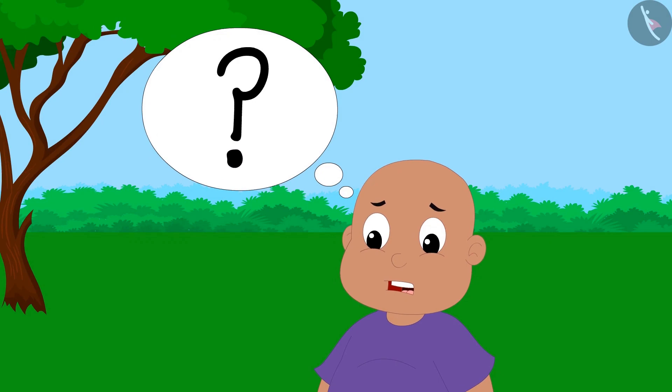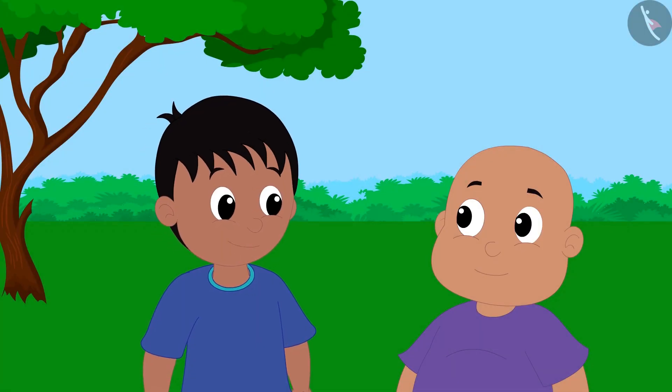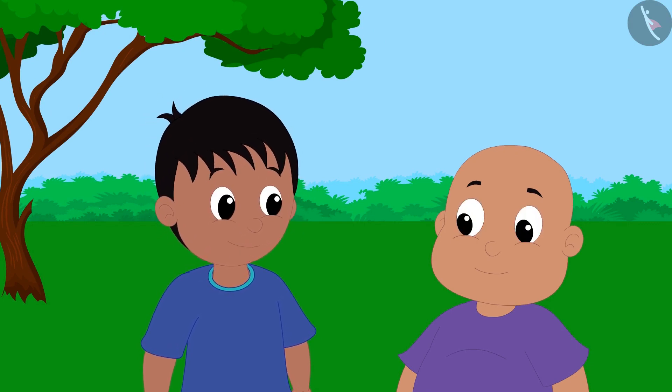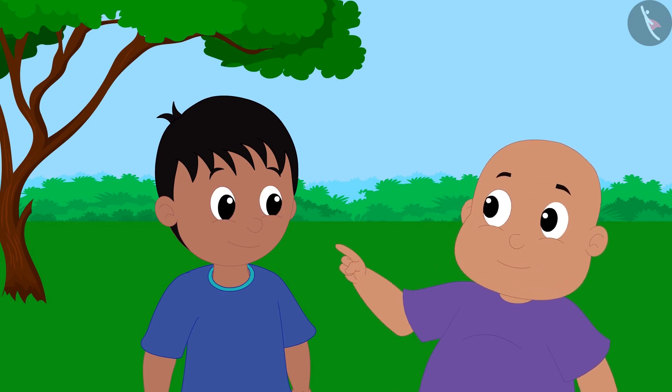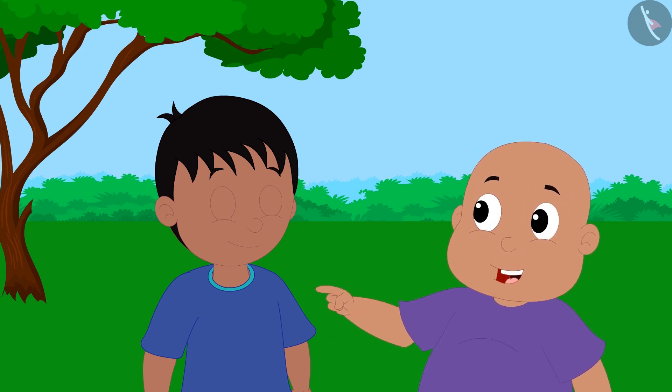Bablu was shocked how Raju did this multiplication so quickly. Raju replied that he knows the magic of mathematics. Bablu could not understand anything. Bablu told Raju that he too wants to learn the magic of mathematics.